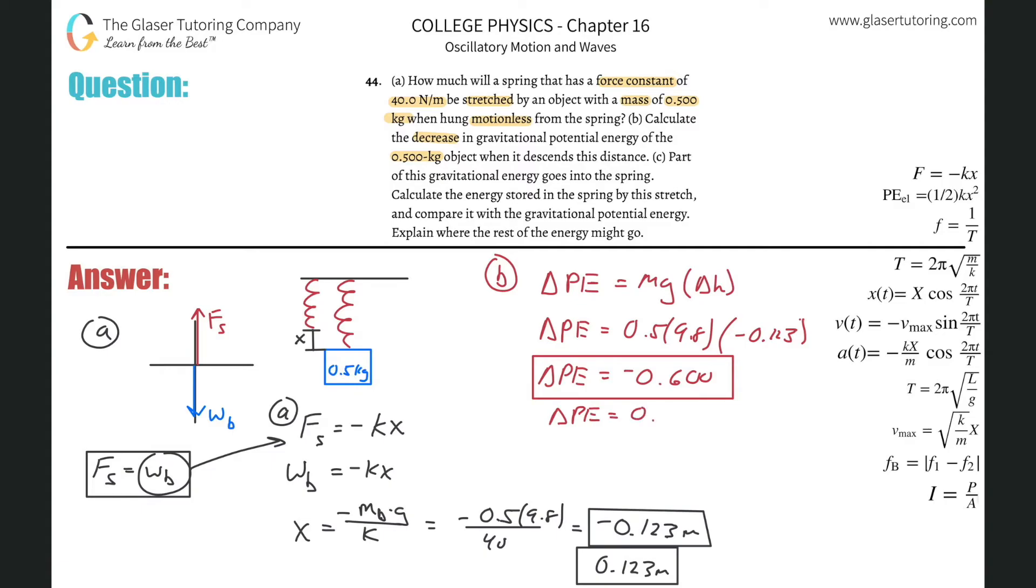If they just said, what's the change, then you would want to write it with the negative sign, because then that tells the reader that it is decreased. Or tells the questioner. So part, letter C. Part of this gravitational energy goes into the spring. Calculate the energy stored in the spring by this stretch and compare it with the gravitational potential energy. Explain where the other energy goes.